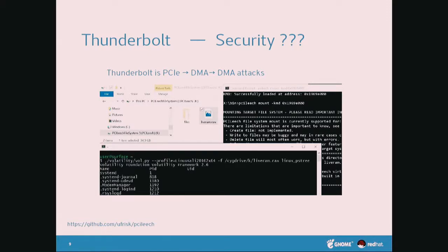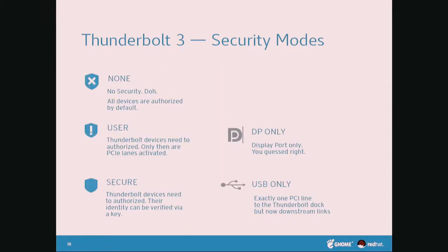Since it provides PCI Express lane tunnels, it comes with some security issues and attack vectors. Via PCI Express you can get DMA access, and there have been proof-of-concept applications and hardware to steal memory over an evil device you just plug into a MacBook. So in the third iteration of the Thunderbolt specification, Intel thought it would be a good idea to implement security modes. There are different security modes you can select in the BIOS.